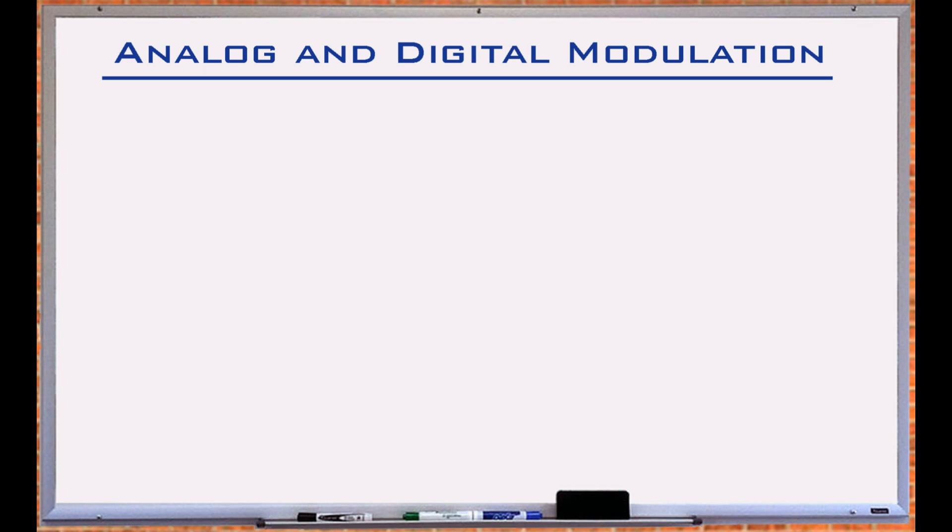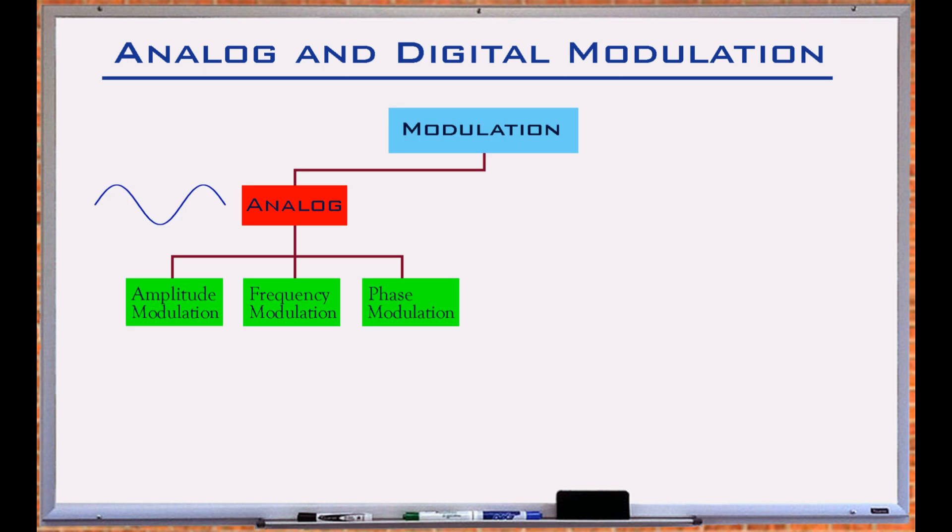AM and FM fall under analog modulation category. In an analog modulation process, the information signal continuously modulates either the amplitude, the frequency, the phase, or the combination of these parameters of the carrier frequency.